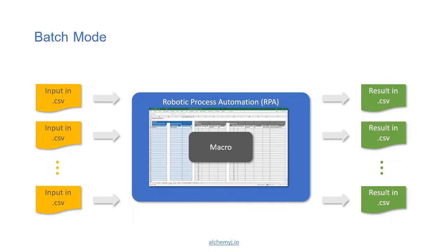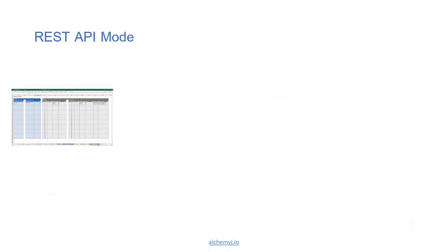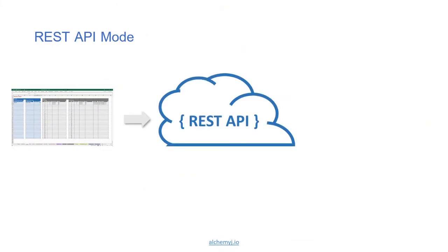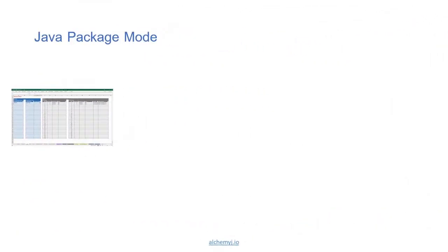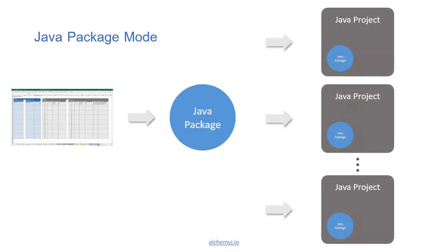Now we can integrate the rule engine with your applications, but batch mode is non-real-time. For real-time integration, the rule engine supports REST API mode — you can compile your rules and actions into a REST API. The portability of REST API is extremely high, so any application that supports outbound REST API calls can integrate with the rule engine. However, the performance may be limited by network communication overhead. To maximize performance, we can run the rule engine in Java package mode, compiling rules and actions into a Java package so that any Java application can have native integration with the rule engine. In the coming videos, I shall show you each of these running modes.